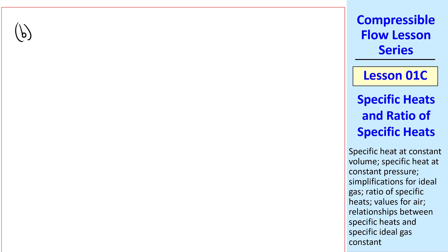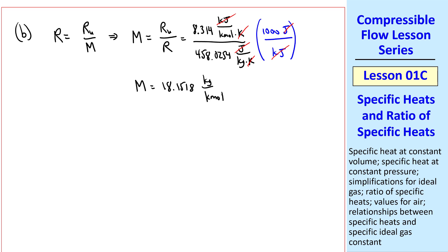For part B, we need to calculate molecular weight. Well, recall that R is Ru over M. So we can solve for molecular weight M as simply the universal gas constant over the specific gas constant. We know Ru to four digits, and we had calculated R as 458.0254 joule per kilogram K. Again, we need a unity conversion factor to get rid of these joules. K's also cancel, as do kilojoules. And we get that M is 18.1518 kilogram per kilomole. But I would write my final answer to four significant digits. We can also do gram per mole instead of kilogram per kilomole, since there's a factor of 1,000 on both the top and bottom. This would be my final answer.